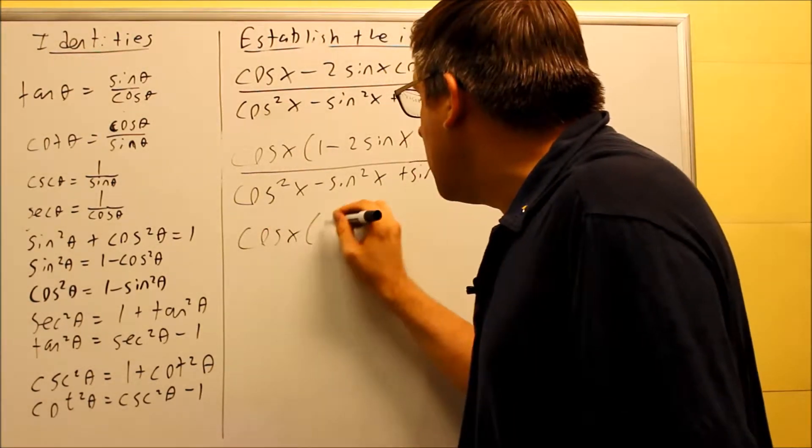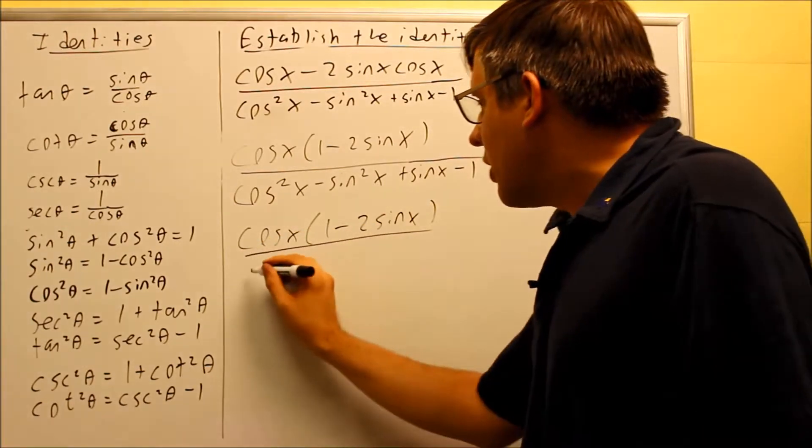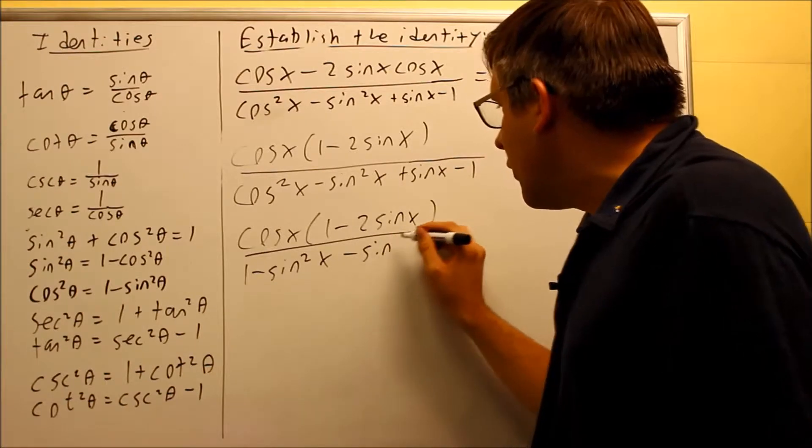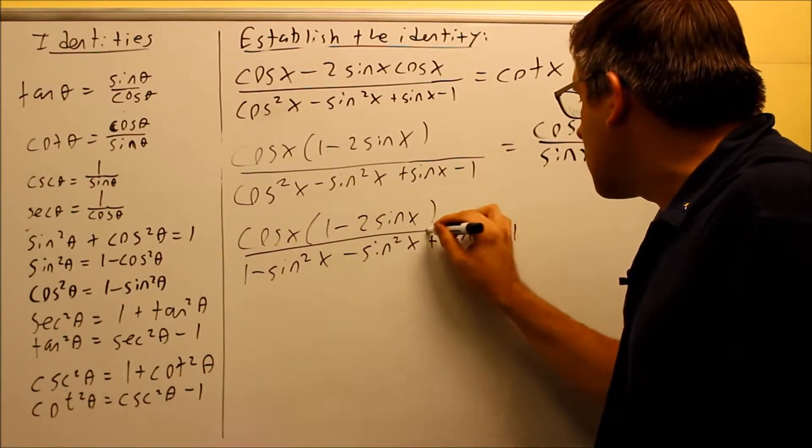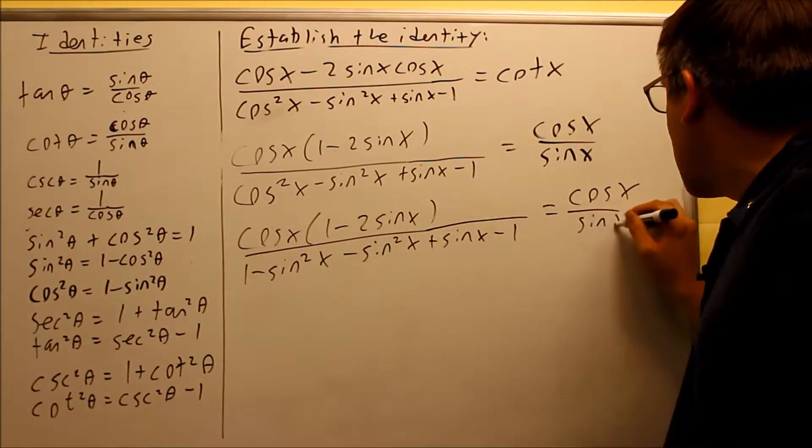So on top, I can't do any more. I've already factored that down as much as I can, so the top is going to be done. The cosine squared, I'm going to put one minus sine squared in there in place of the cosine squared. I made a substitution on that one. Everything else is going to be written the same, and I still have cosine x over sine x over here on the right-hand side.